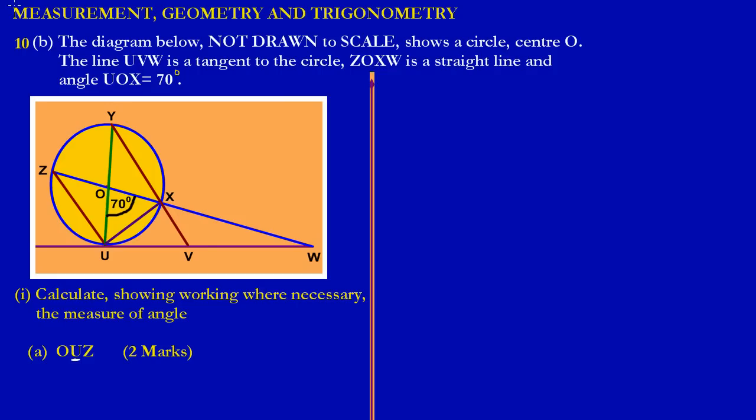Since they're asking us to calculate angle OUZ, we're going to consider triangle OUZ. This is the triangle—the point O, coming down to U, and then going up to Z. Let's pretend I've used scissors and cut this triangle out. If I cut out that triangle, I would have something looking like this.